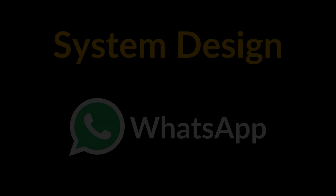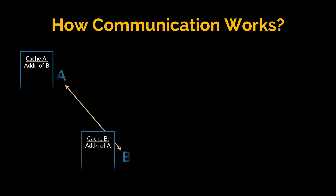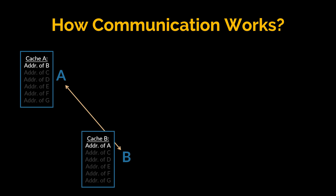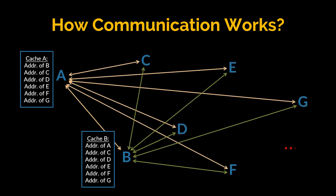Before diving deeper into the subject, let's understand how communication works. When two clients A and B want to communicate or send messages to each other, they first need to know the address of one another — it may be IP, MAC, or any customized unique identity — and they exchange messages over a network, in this case the internet. But what if the network is very large and the number of clients is in the millions or billions?